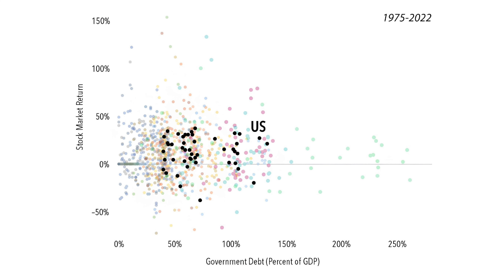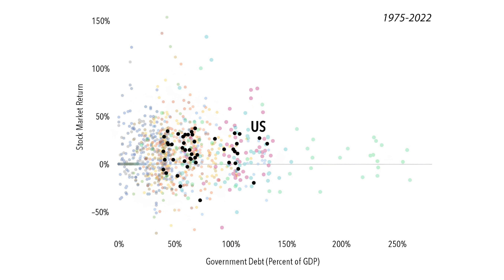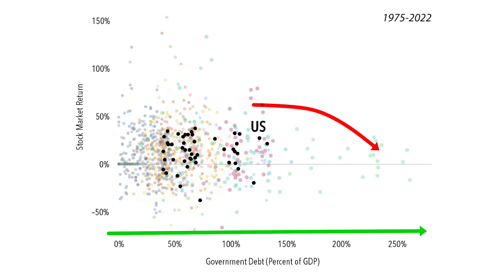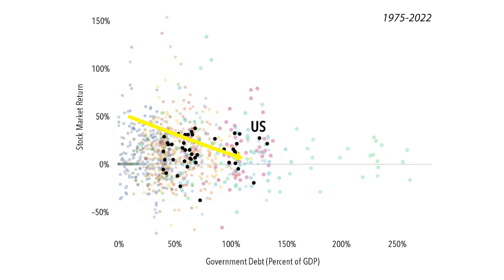All the muted colors represent other countries, while the U.S. is shown in black. Many people might assume that a really high level of debt relative to GDP is bad for the stock market. So you'd expect the dots to slope downward to the right — meaning higher government debt corresponds to worse annual stock market performance.